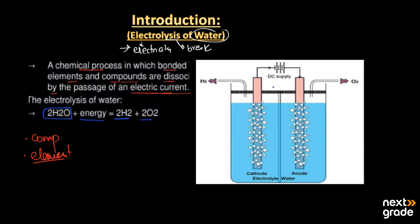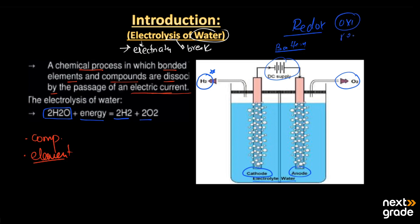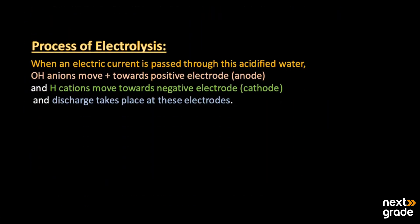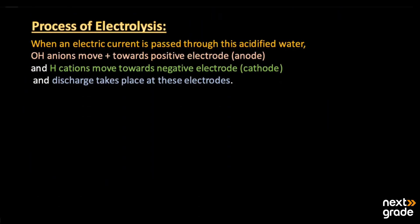Two electrodes are inserted into the electrolyte solution — one is the cathode and the other is the anode — with the electrolyte present in the water. On one side there is production of hydrogen gas, and on the other side there is production of oxygen gas, when attached to an energy source or battery. Overall, this is a redox reaction in which oxidation takes place at the anode and reduction takes place at the cathode.